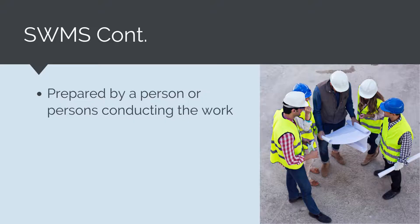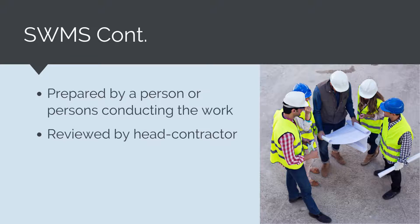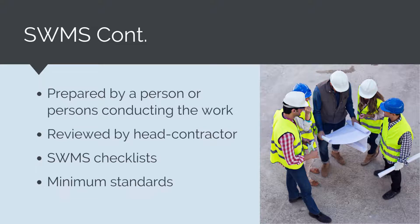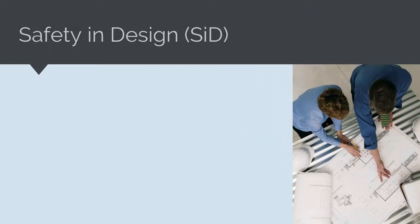A SWMS should be prepared by the person or persons conducting the works. As the head contractor, for any self-performed works we will prepare our own SWMS, but for subcontractor works we will review the subcontractor's SWMS to check and verify it meets the minimum requirements and all hazards are correctly identified and controlled. As a head contractor, we will have a SWMS checklist and set of minimum controls for each activity in our company guidelines. The use of SWMS for all high-risk construction activities is a legislative requirement in Australia.